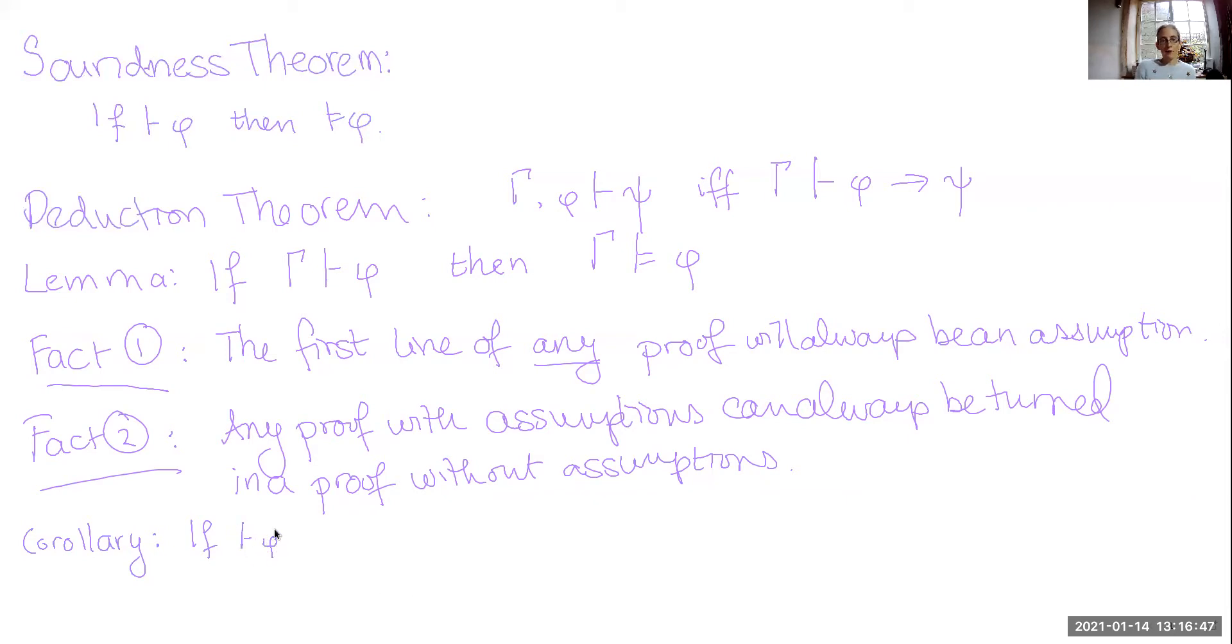Corollary: If you have some formula φ which you can prove from no assumptions whatsoever, then φ is not an assumption. This falls straightforwardly out of the nature of proofs.